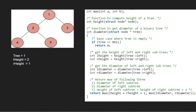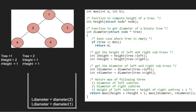Now we recursively call the diameter function and get the diameter of the left and right subtrees. First, we pass the left child of 1 which is 2. The left height of 2 is 1 as there is only one element in both the left and right subtrees of node 2. Now we get the diameter of the left and right subtrees of node 2.